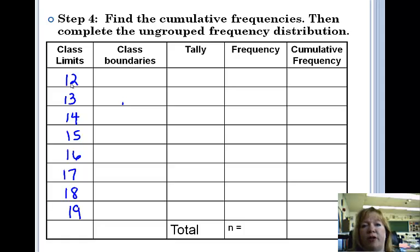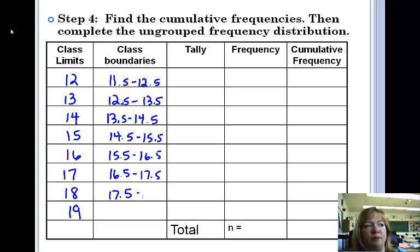Class boundaries, remember, you go down by a half a step and up by a half a step. So these are going to be 11.5 to 12.5, 12.5 to 13.5, 13.5 to 14.5 and so on. Now, a way to check that you have done this right, the widths all have to be the same. So the class widths, if I take 13 minus 12, I get 1. That needs to be the same as when I subtract the class boundaries. If I subtract 12.5 minus 11.5, that needs to be 1. So you can check that you set that up correctly if the class widths are consistent.